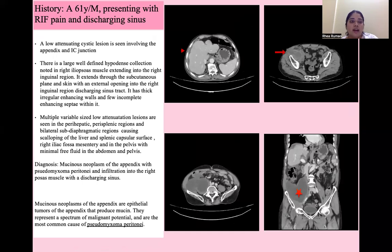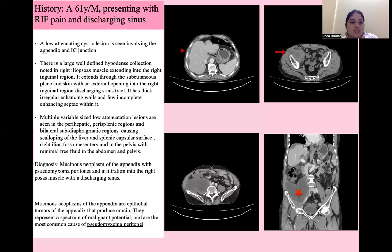Next is a 61-year-old male presenting with right iliac fossa pain and a discharging sinus. There is a low attenuation cystic lesion involving the appendix and the base of the cecum and ileocecal junction, with a large well-defined hypodense collection in the right iliopsoas muscle extending into the right inguinal region through the subcutaneous plane and skin with an external opening — a discharging sinus tract. It shows thick irregular walls and incomplete enhancing septae. Multiple variable-size low attenuation lesions are seen in the peri-hepatic, perisplenic, and bilateral subdiaphragmatic regions causing scalloping of the liver and splenic capsular surface. Diagnosis: mucinous neoplasm of the appendix with pseudomyxoma peritonei and infiltration into the right psoas muscle with a discharging sinus. Mucinous neoplasms of the appendix are epithelial tumors that produce mucin, representing a spectrum of malignant potential and are the most common cause of pseudomyxoma peritonei.